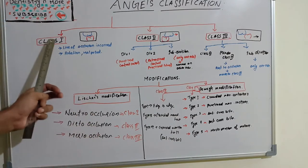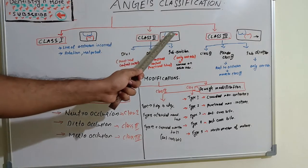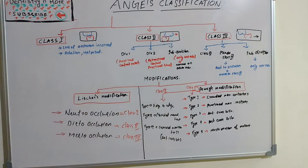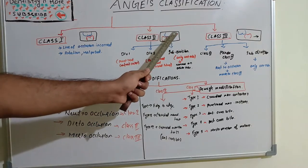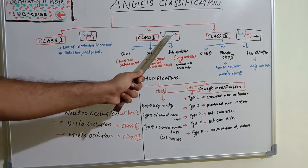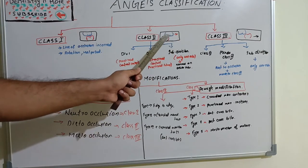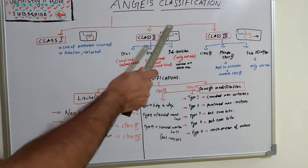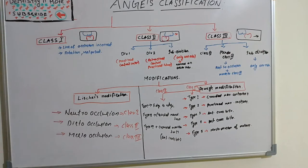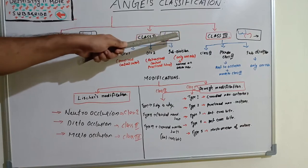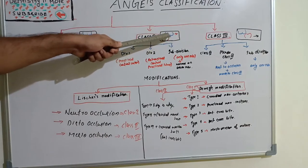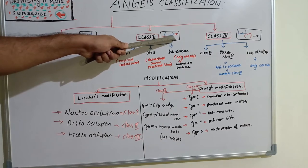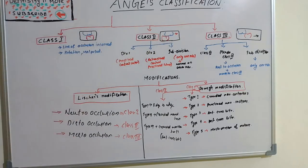That is Class 1 malocclusion. In Class 2 malocclusion, the mesio-buccal cusp is not coinciding with the buccal groove — it is more distally placed, so the distal portion of the disto-buccal cusp is somewhat coming to the buccal groove of the lower first molar. The maxilla is going forward because the maxillary teeth are going forward.